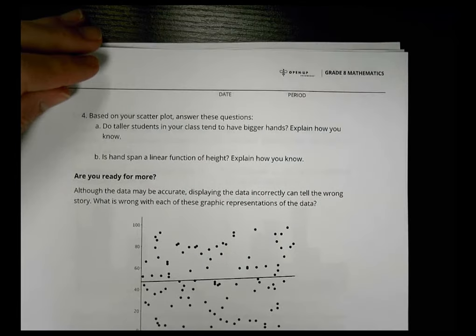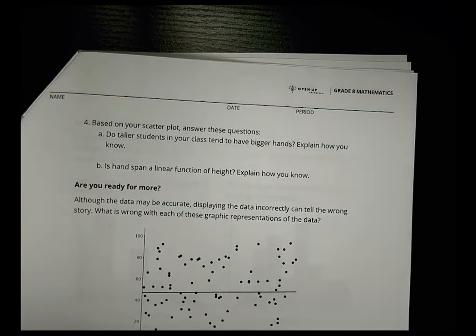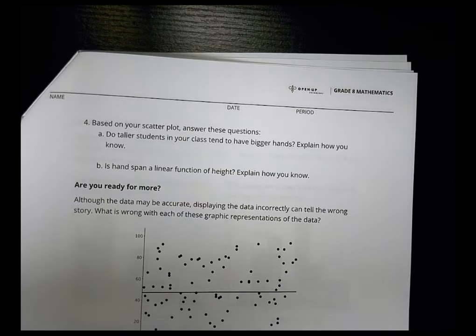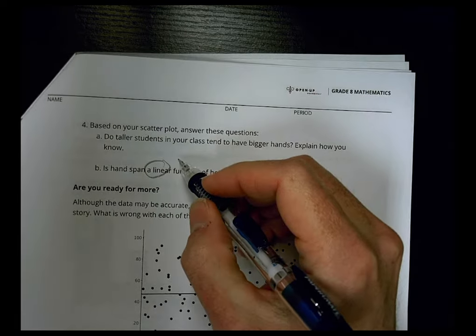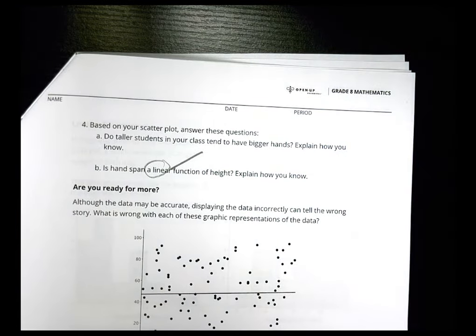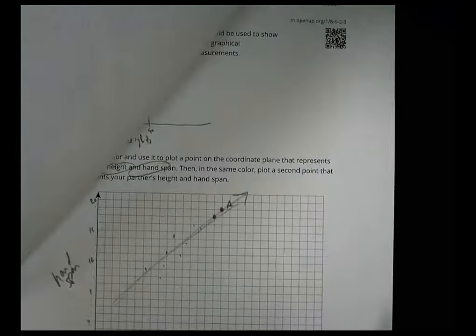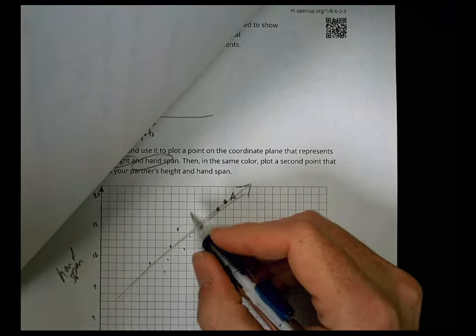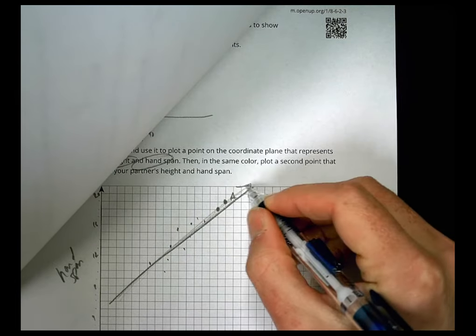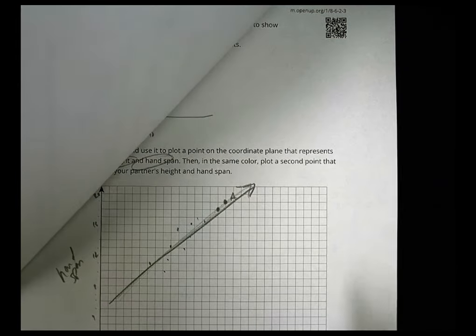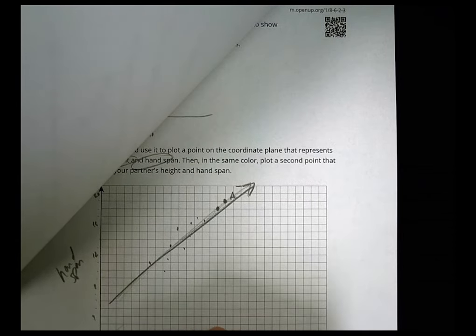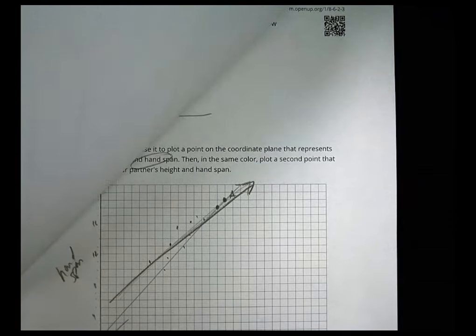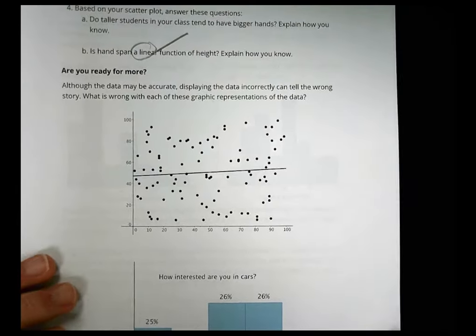All right. So, based on the scatter plot, do taller students in your class tend to have bigger hands? Well, we would say, yeah, they do. The taller a person is, the bigger the hand tends to be. So is hand span a linear function of height? So linear is going to mean this. It means, is it a straight line? Is it like one-to-one correlation? And what we see here in our data, and again, if you have more, you'll notice it's not a quite straight line. You have things that are close to the line, but not straight on the line. For it to be linear, it had to be absolutely perfect. And it would probably also need to go through the origin as well. And start right there and be exactly perfect, which this one isn't exactly perfect. So we'd say no to that one right there.